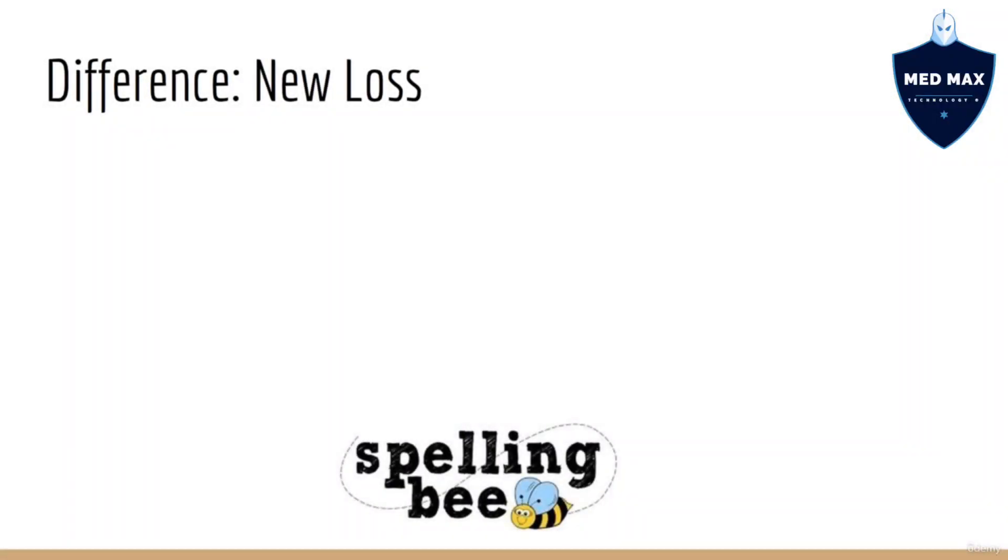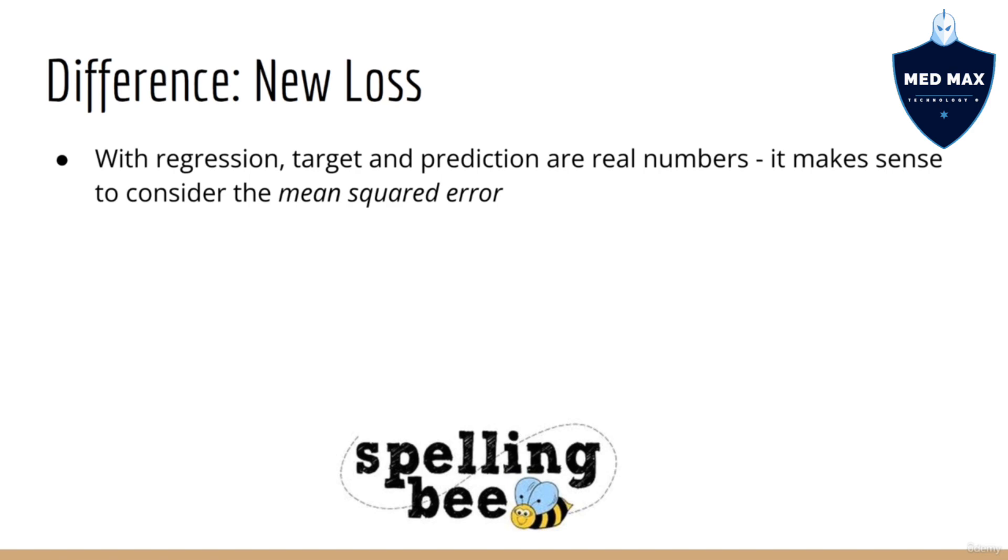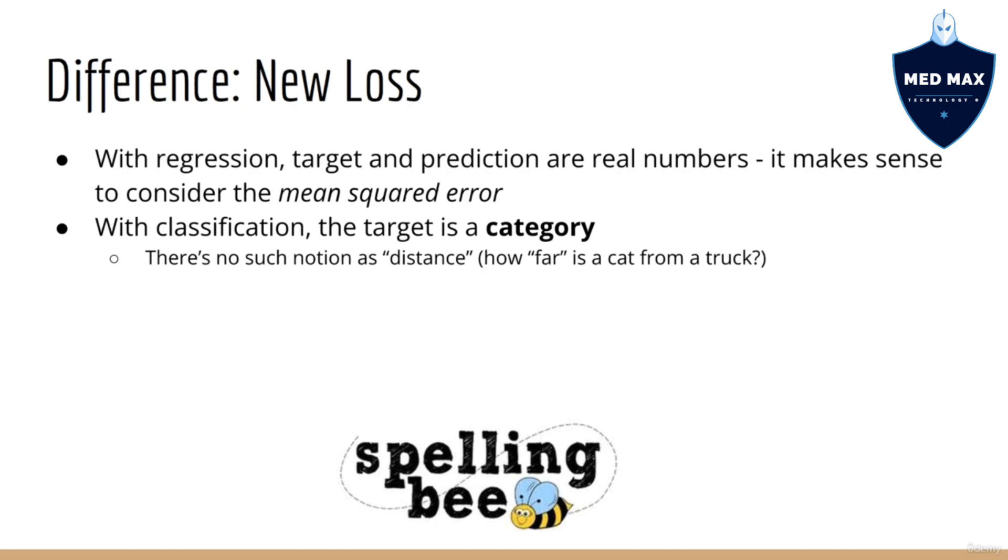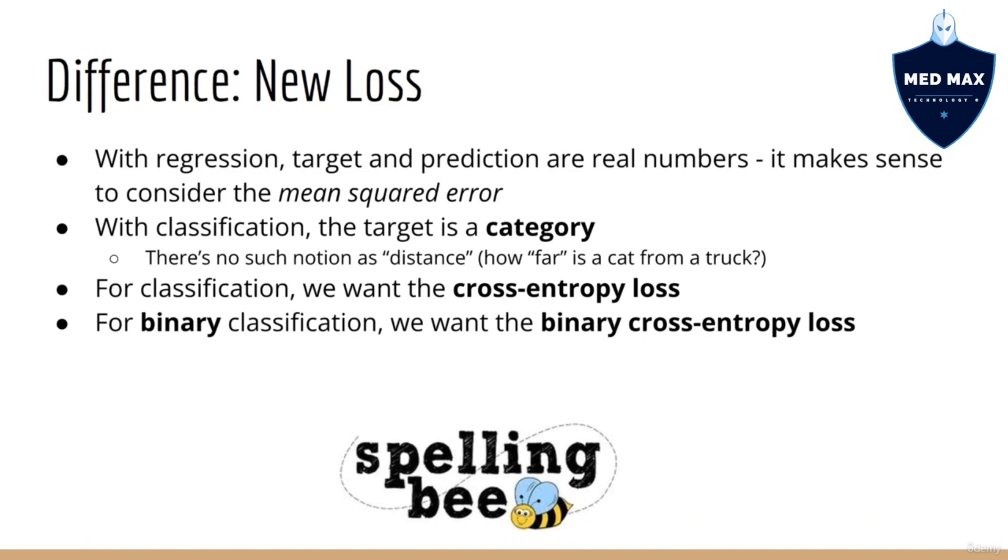The main difference in the training process between regression and classification is that we have a different loss function. As you recall, in regression, our target is a real number, and our prediction is also a real number. In this scenario, it makes sense to use a loss like the mean squared error, or MSE. But in classification, our target is a category. Our model output is the probability that the input belongs to each of the categories. So the mean squared error doesn't make any sense in this scenario. In fact, for classification, what we want is the cross entropy loss. There's one little wrinkle here, which is that we're doing binary classification, in which there are only two possible classes, and the corresponding loss is called the binary cross entropy loss. In general, if your model can handle any number of classes, then you'll use the regular cross entropy loss, but we'll discuss that later in this course.